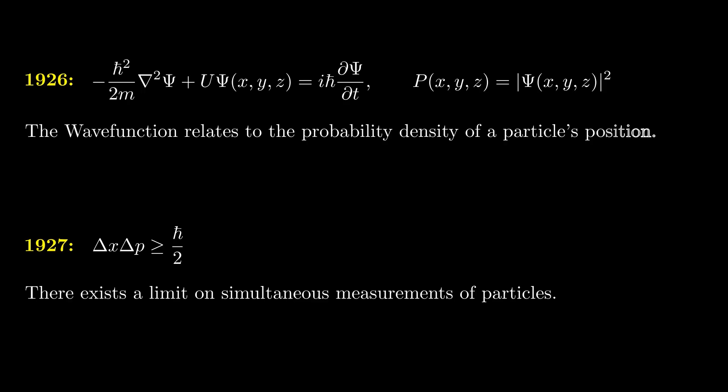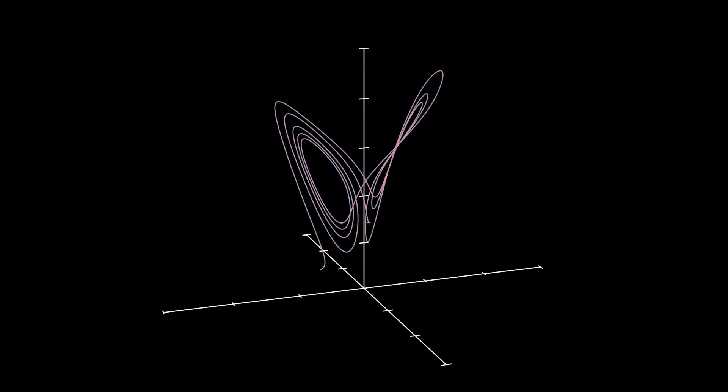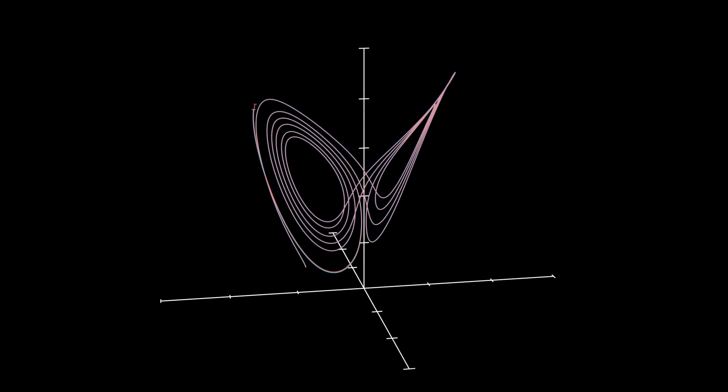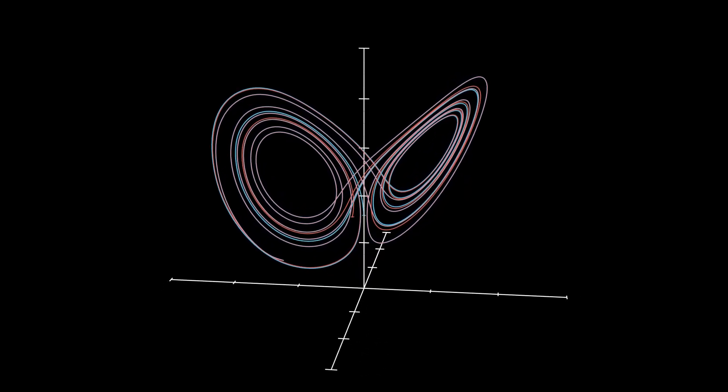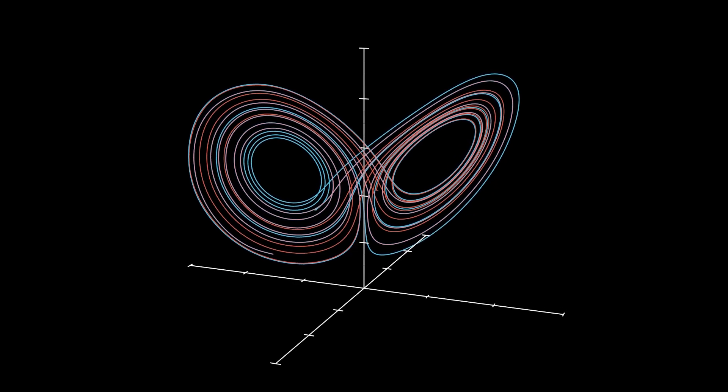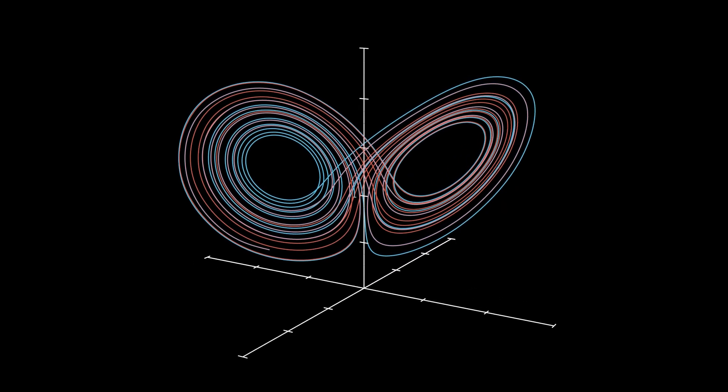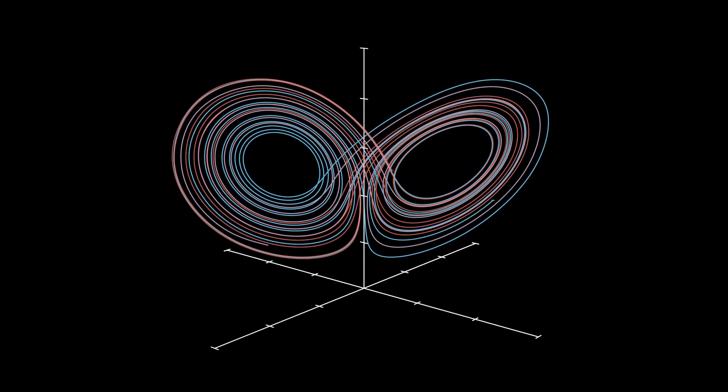Although displaying similar properties to our strange attractors from before, the unpredictability of quantum mechanics stems from a fundamentally probabilistic universe, whereas systems like the Lorentz attractor appear chaotic and unpredictable due to a sensitivity to initial conditions.